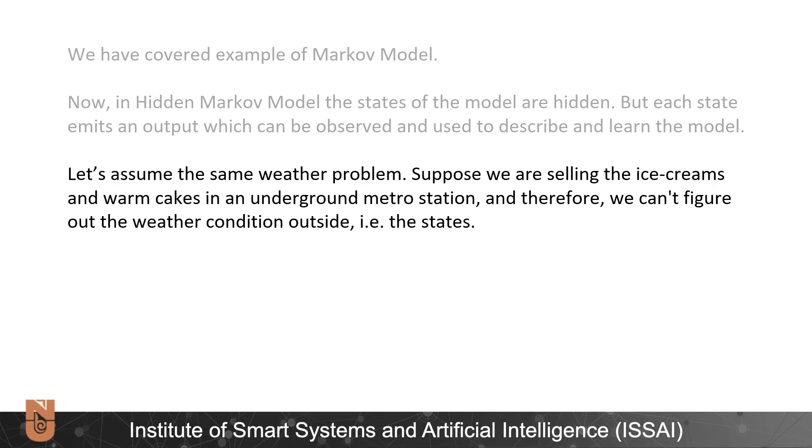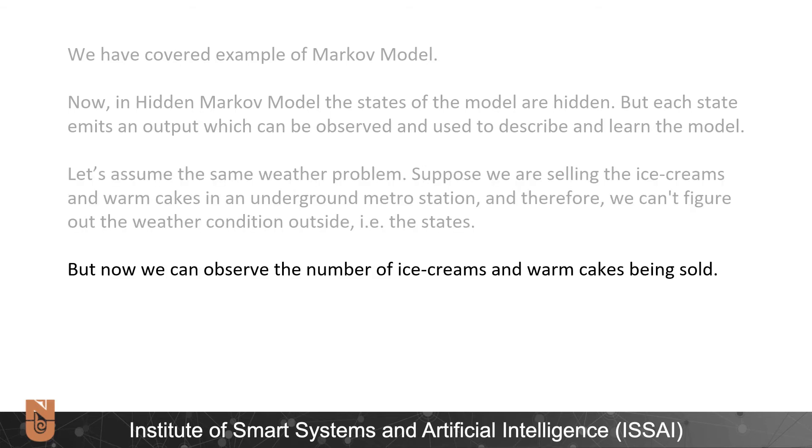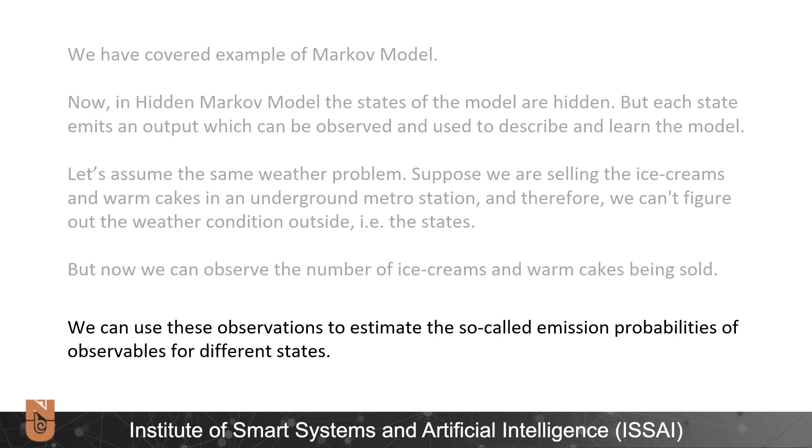Let's assume the same weather problem. Suppose now we are selling two types of dessert, ice cream and warm cakes, in an underground metro station and that's why we cannot figure out the weather conditions outside. So we can't see the states. But now we can observe emissions as number of ice cream and warm cakes being sold. Let's assume that from past experience we know the number of sold ice cream and warm cakes during sunny days and rainy days. We can use these observations to estimate emission probabilities for different states.